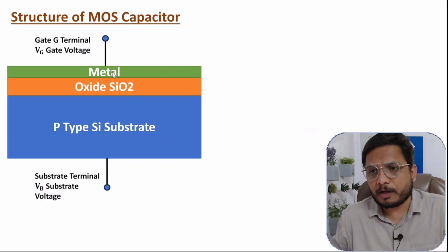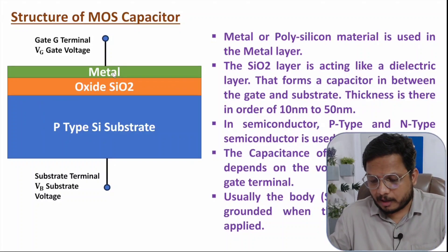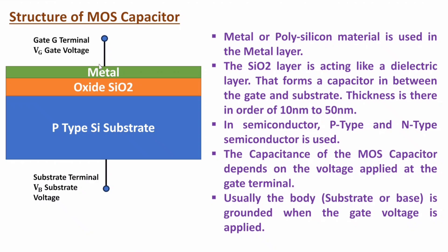The metal layer could be aluminum or polysilicon. The oxide layer is SiO2, which acts as a dielectric layer and forms capacitance between the gate and substrate. Its thickness is in the order of 10 nm to 50 nm. The semiconductor can be P-type or N-type. The capacitance of the MOS capacitor depends on the voltage applied at the gate terminal. Usually, the substrate is grounded and biasing voltage is applied at the gate, so based on the applied voltage, the capacitance changes.